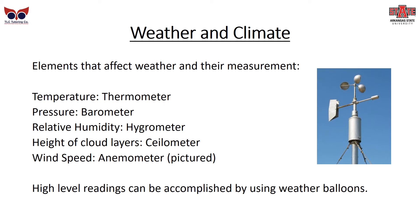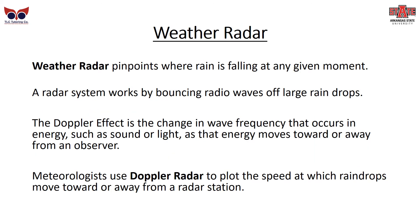Elements that can affect weather and how we measure them: temperature is measured with a thermometer, and pressure with a barometer. Relative humidity — the amount of water in the air — is measured with a hygrometer. The height of cloud layers is measured with a ceilometer. Wind speed is measured with an anemometer, which is the device pictured here. High-level readings can also be accomplished using weather balloons, which many of you have probably seen before.